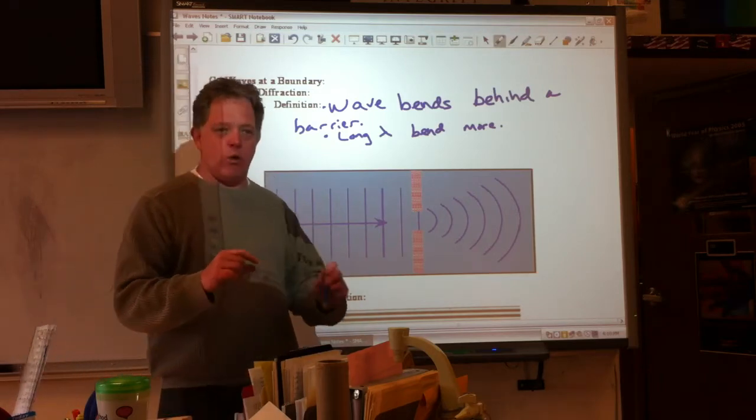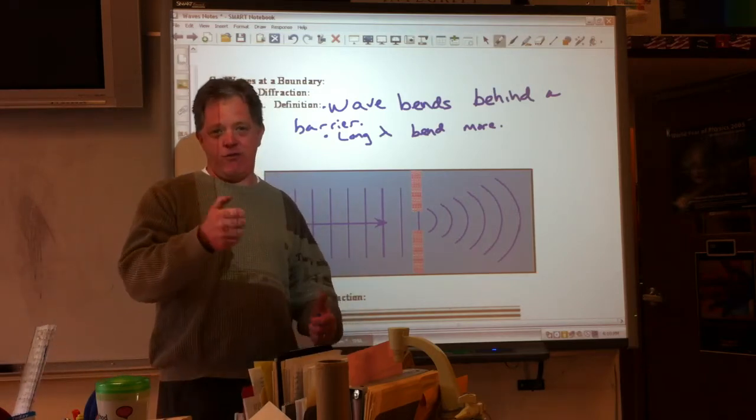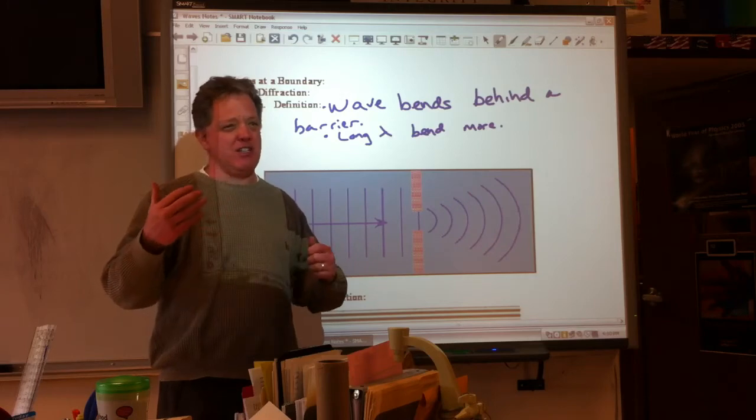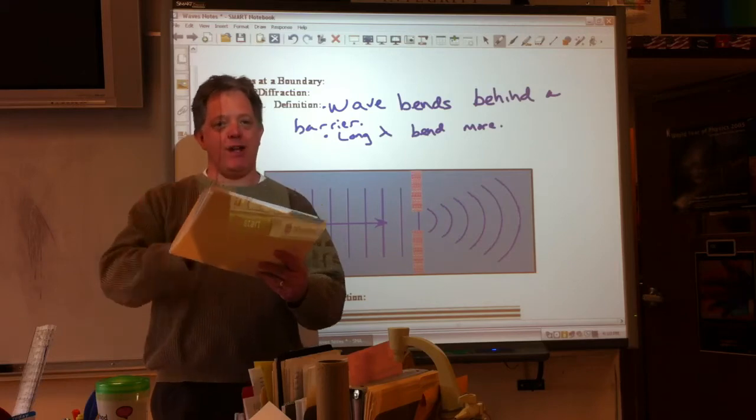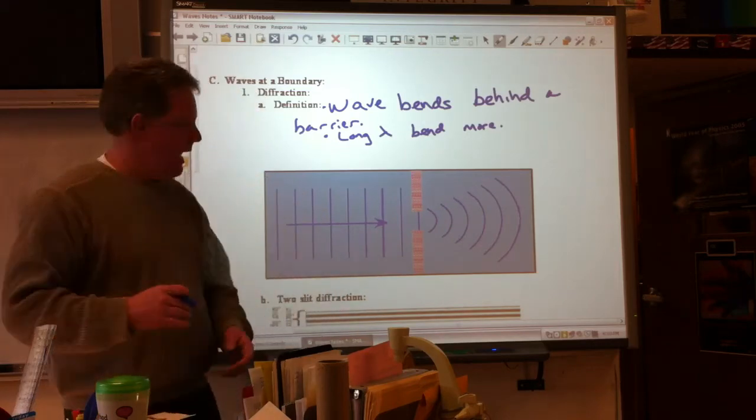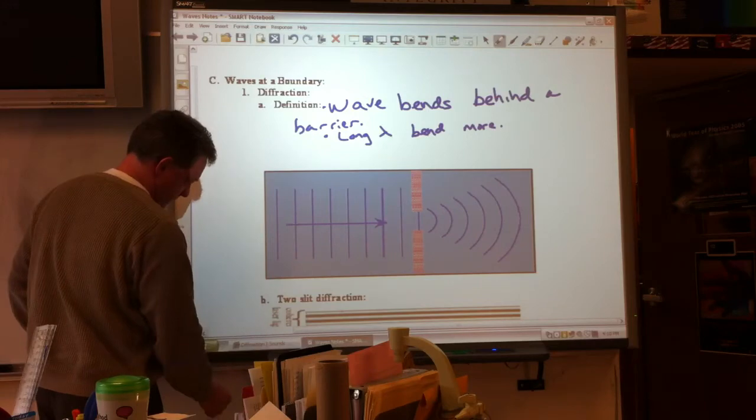Light waves are on the order of 10 to the minus 7th meters. We found that for the laser, which is a millionth of a meter. So way, way smaller than this barrier. So that small wavelength can't bend very well. And I have a little thing that shows that.